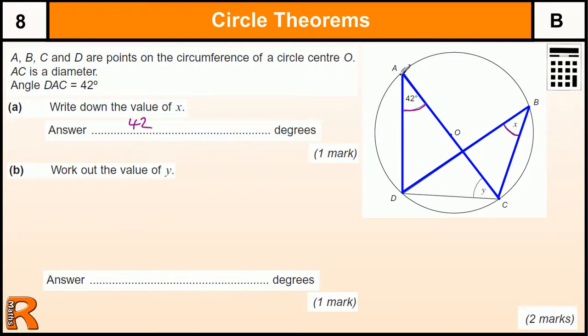Why is that? Because any angle formed from a chord in any part of the circle is always the same. It doesn't matter where I draw this, it will always be 42 so long as it comes from this chord here.